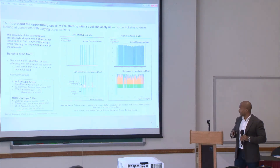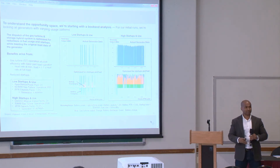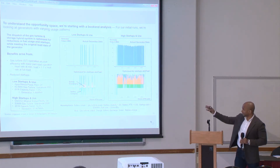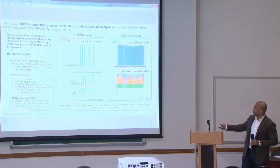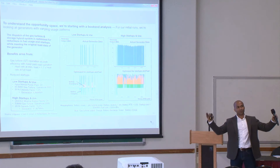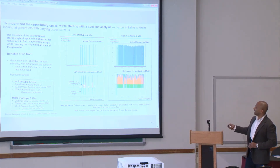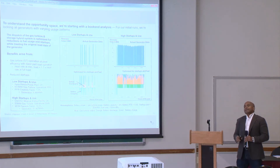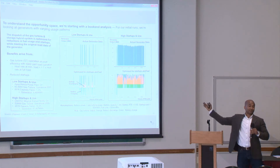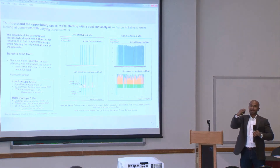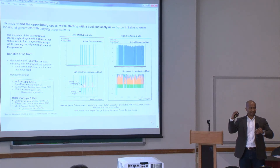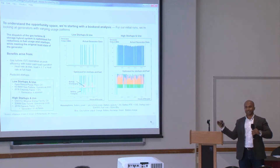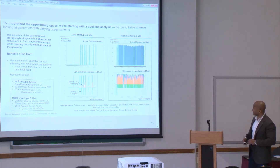Across the US we have generator data. For California, to do a bookend analysis, we picked two generators: one with low startups and use, and another with high startups and use. The idea was to bookend how much savings you might have. We looked at the actual generator output — let's say for 2017 — and then brought in a battery to figure out the efficient heat rate, running those generators at that efficient heat rate to see what difference having a battery would make with regard to fuel savings.